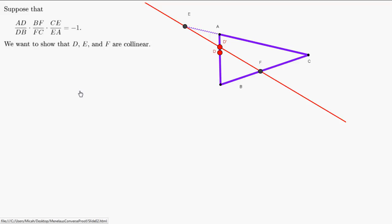This video is about proving the converse of Menelaus' Theorem, which states: if you have three points chosen on the sides of a triangle such that the product of the ratios of division equals minus one, then those three points must be collinear.